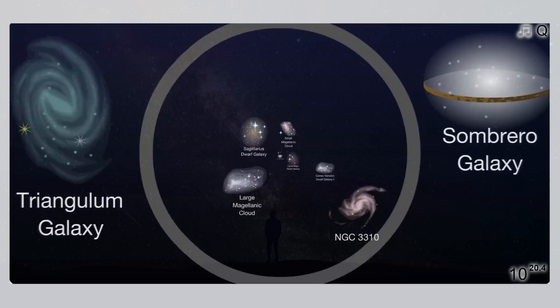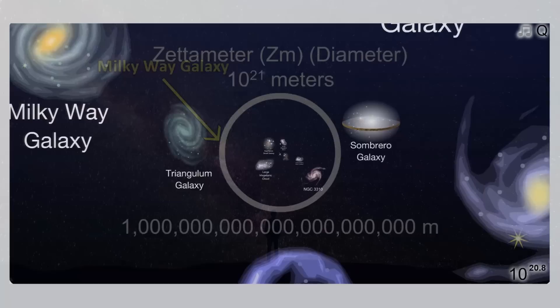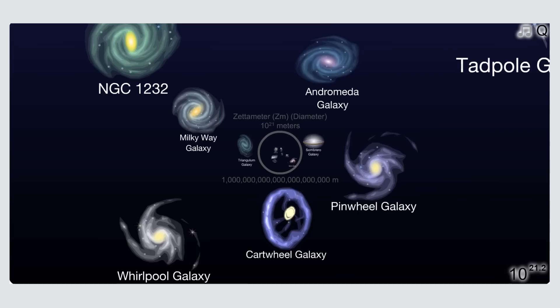Other than the fact that we live here, there's really nothing particularly remarkable about our galaxy. It's a typical spiral galaxy. There are billions of such galaxies in the universe. Our neighbor, the Andromeda galaxy, is larger, containing 1 trillion stars.